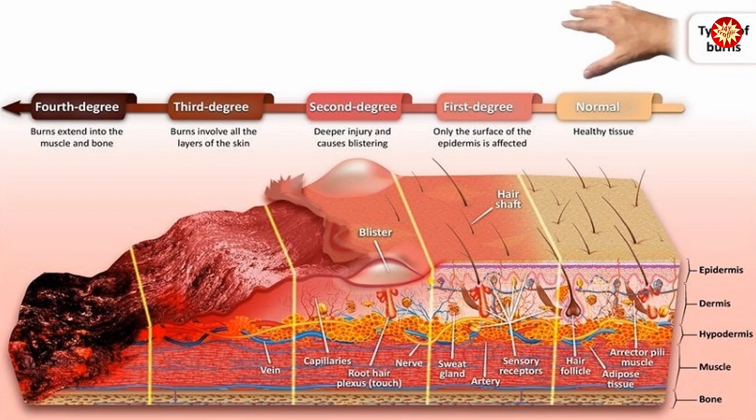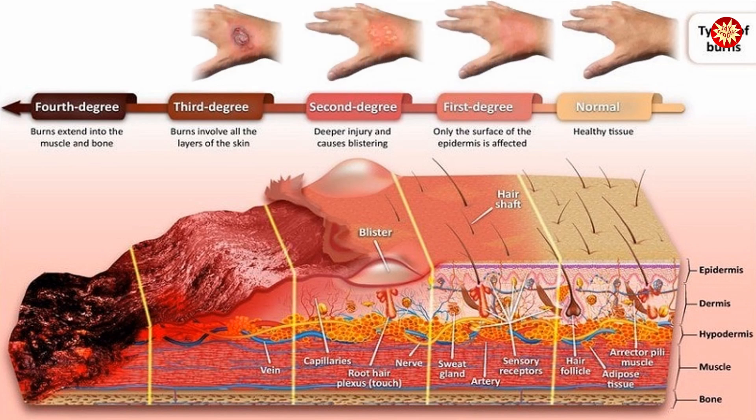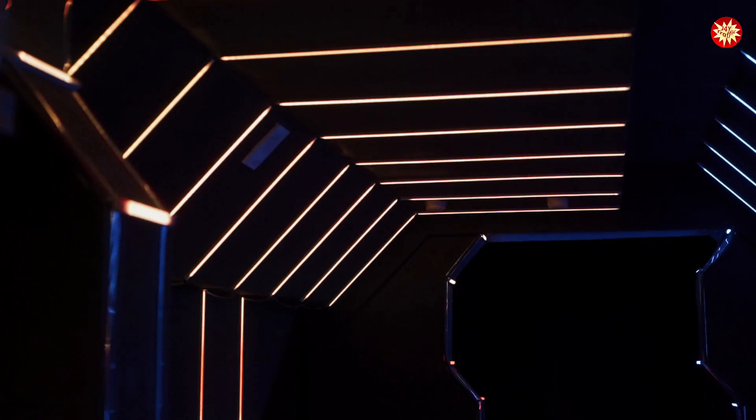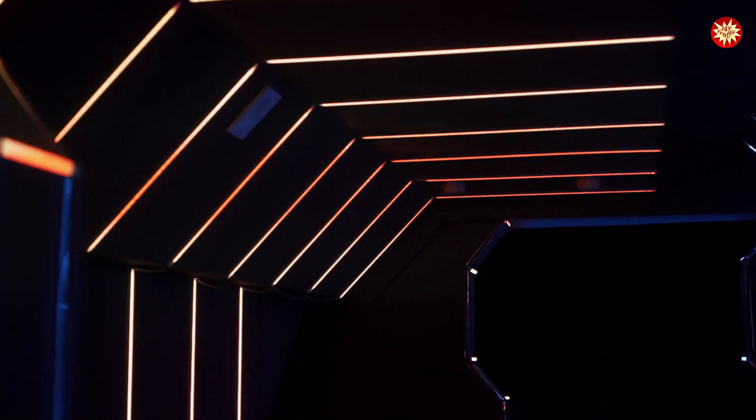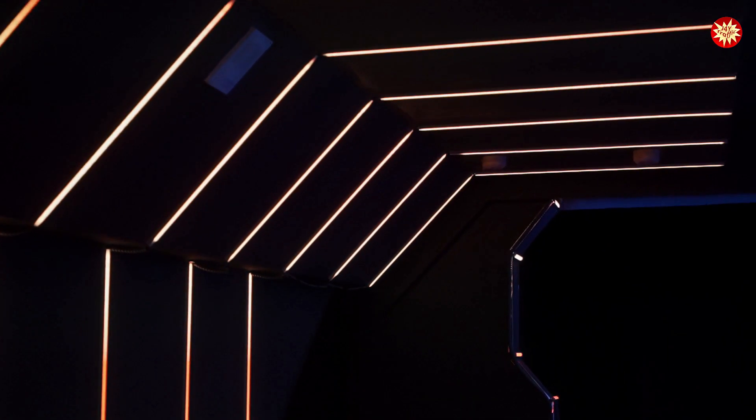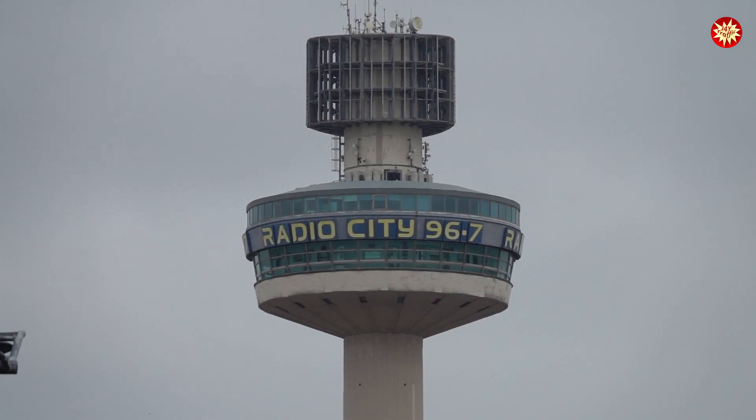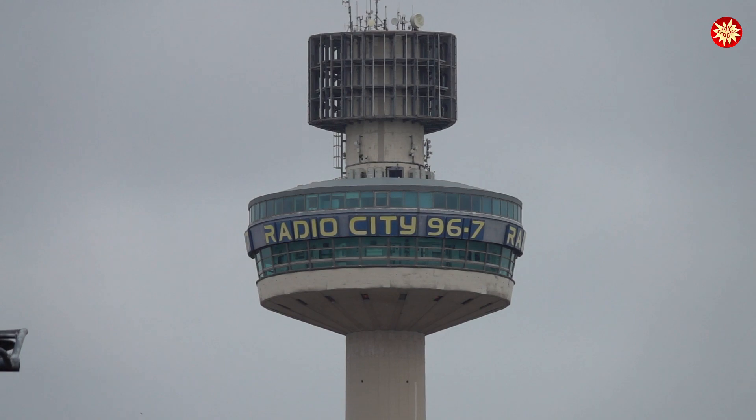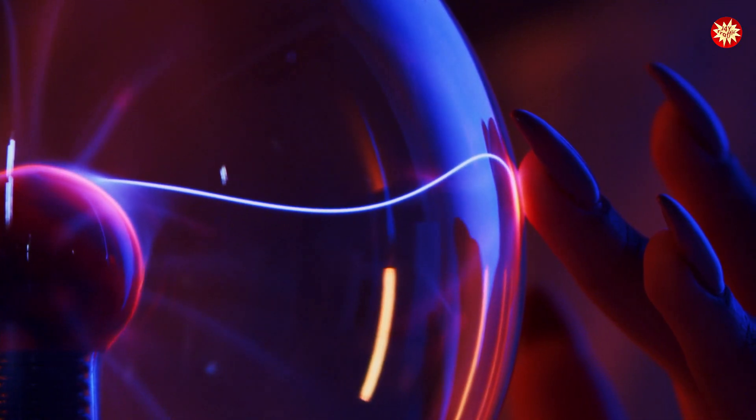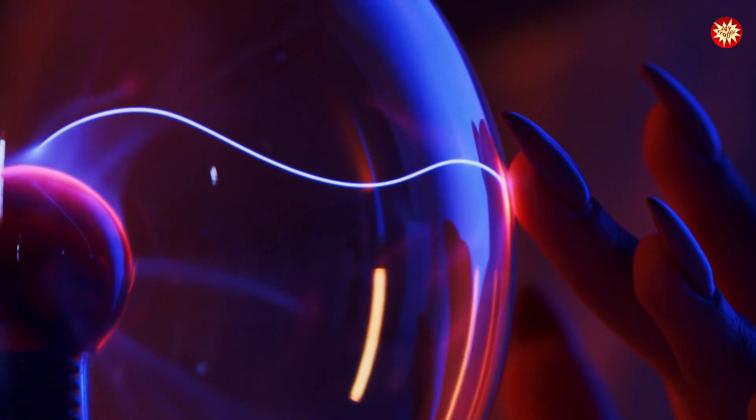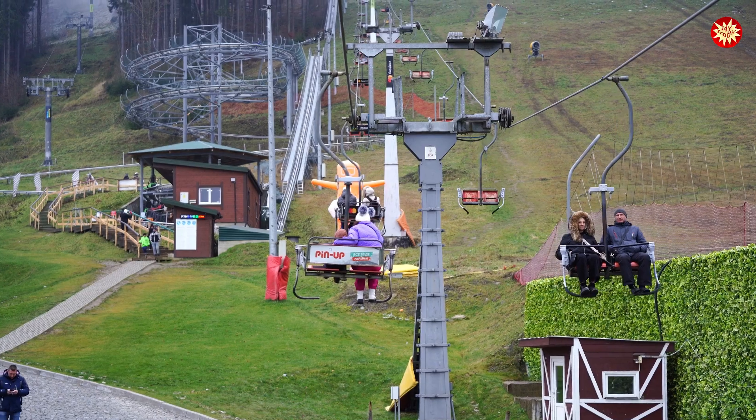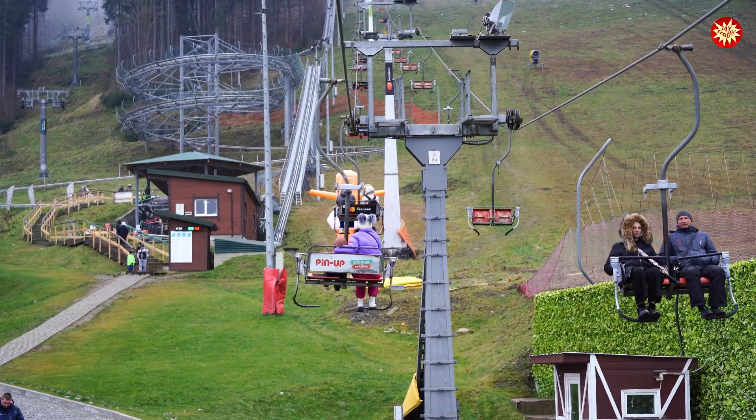Understanding the importance of non-ionizing radiation safety signs is crucial. These signs serve as a shield, guiding us away from potential harm. By being aware of these signs and following safety protocols, we can safeguard ourselves from the invisible dangers of non-ionizing radiation. Remember, knowledge is power when it comes to protecting ourselves in environments where this type of radiation exists. Stay informed, stay safe.